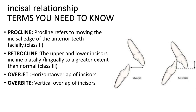Retrocline is a condition in which the upper or lower incisors are inclined palatally or lingually to a greater extent than normal. You can see this condition in Class 3 malocclusion when the upper incisors are retroclined.